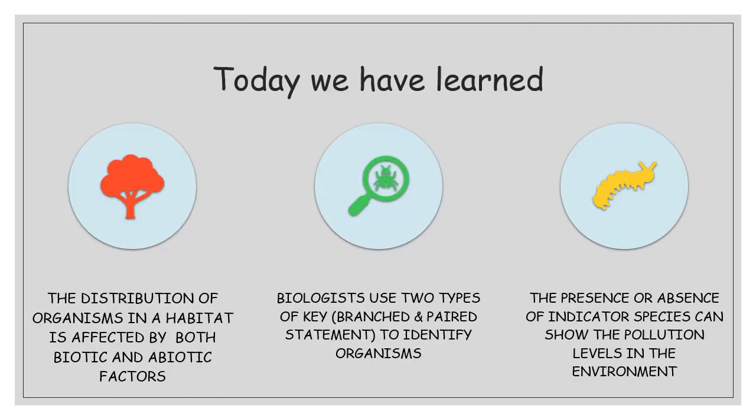So we've gone through a lot today. Distribution of organisms in a habitat is affected by both biotic — living — and abiotic — non-living — factors. We can identify different organisms found through sampling using branching keys and paired statement keys. We've also talked about indicator species, whose presence or absence can give an indication about the pollution levels of an environment — the two examples being air quality using lichens and water quality using freshwater invertebrates. Hopefully you found that informative and engaging; if you have any questions, give me a shout. Bye!